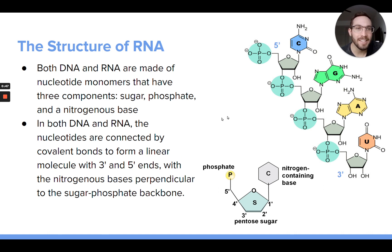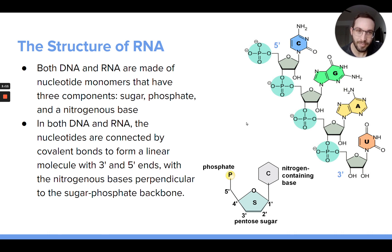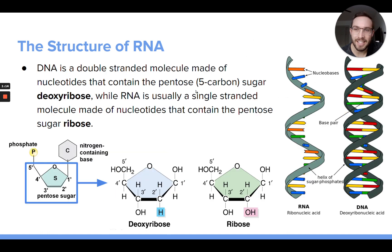RNA, just like DNA, is a nucleic acid — it's a polymer of nucleotides, so it's a bunch of nucleotides bonded again and again. The nucleotides that make RNA are just like the ones that make DNA with some minor differences: they have a pentose sugar, a phosphate group, and a nitrogenous base, with a 3' and a 5' end just like DNA. One big difference is that DNA is usually double-stranded while RNA is usually single-stranded.